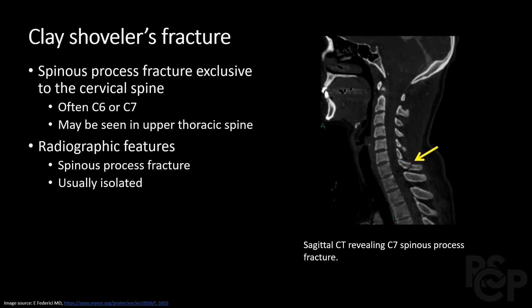Lastly, we have the clay shoveler's fracture. As you can imagine, this may occur when trying to heave something heavy with sudden muscular or ligamentous pull. This is a unique fracture describing a spinous process fracture of the lower cervical spine or upper thoracic spine, typically around C6 or C7. Radiographically, it appears as isolated spinous process fractures, potentially in two contiguous vertebrae, but usually no other types of fractures. It is often treated conservatively. Thank you all for watching.